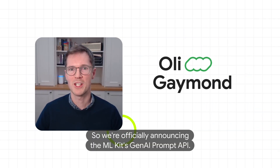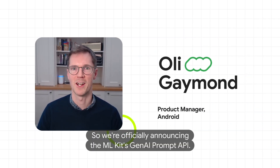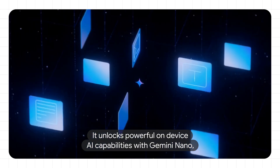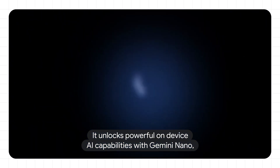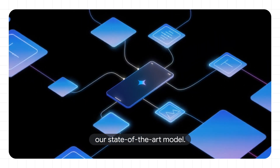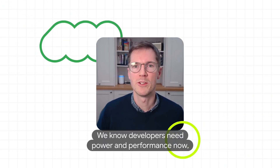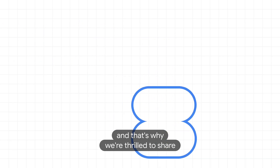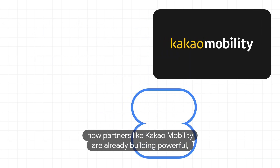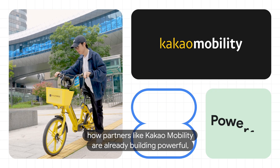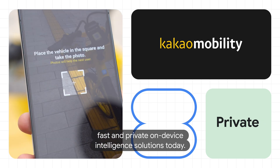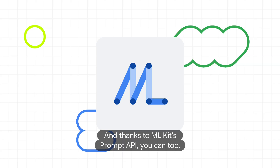We're officially announcing the ML Kit's Gen.AI Prompt API. It unlocks powerful on-device AI capabilities with Gemini Nano, our state-of-the-art model. We know developers need power and performance now, and that's why we're thrilled to share how partners like Kakao Mobility are already building powerful, fast, and private on-device intelligence solutions today. And thanks to ML Kit's Prompt API, you can too.